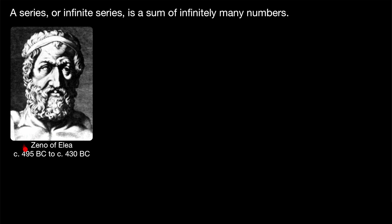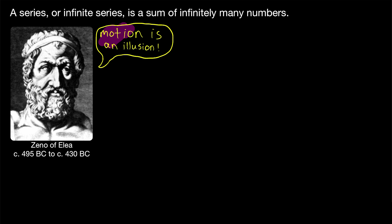We begin with Zeno of Elea, who lived from around 495 BC to 430 BC. Zeno was one of those many very smart Greek philosophers, and he argued that motion is an illusion. This may seem like a silly thing to say, since we see things move all of the time. But Zeno argued his case by presenting several paradoxes, which made ordinary motion seem impossible.